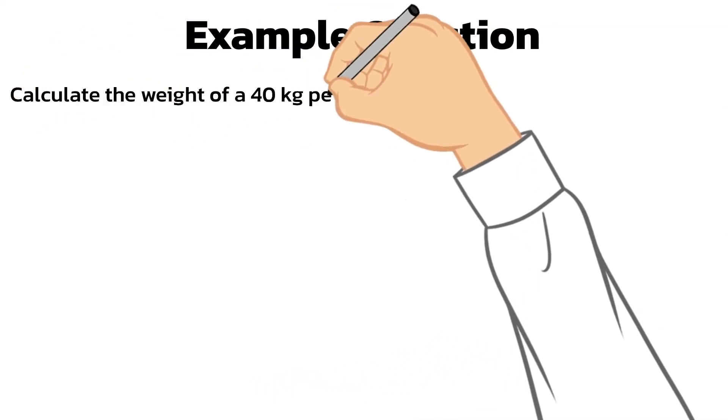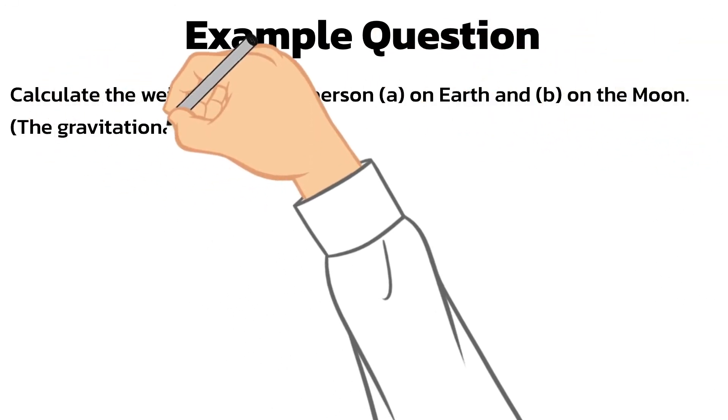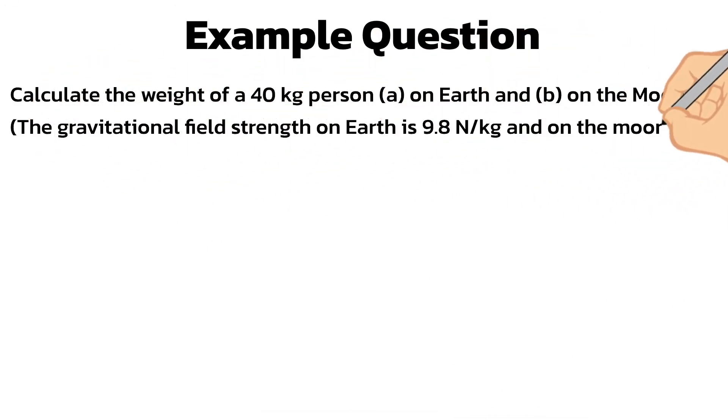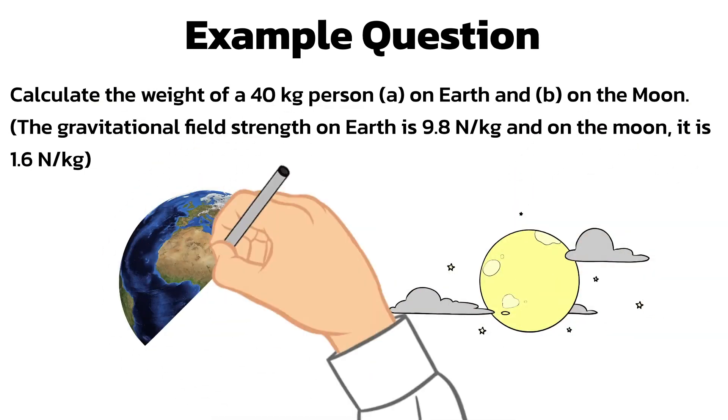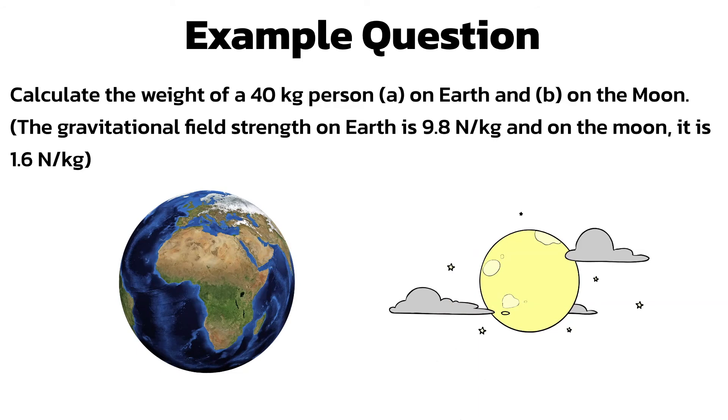Try this example question. Calculate the weight of a 40 kilogram person, part A on Earth, and part B on the Moon. Gravitational field strength on Earth is 9.8 newtons per kilogram, and on the Moon it is 1.6 newtons per kilogram. Pause the video and restart it when you're ready.